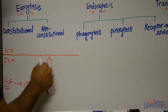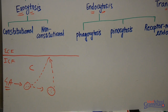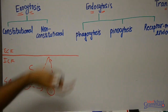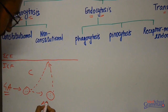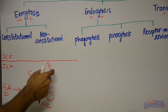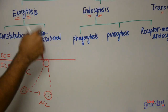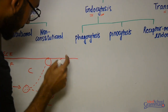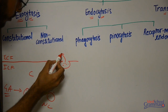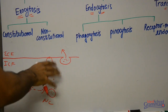The first mechanism, in which there is no processing, is known as constitutional exocytosis. The second mechanism, in which the vesicle first undergoes a certain kind of processing and then binds with the plasma membrane, is known as non-constitutional exocytosis. When the vesicle binds with the plasma membrane, the two membranes fuse and dissolve, and all the macromolecules move out. This is the complete process of exocytosis.